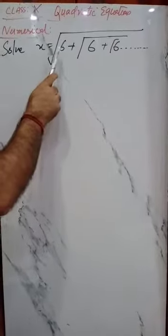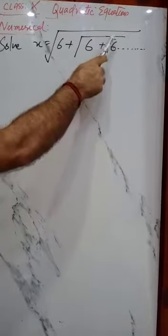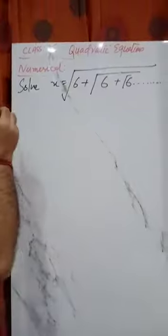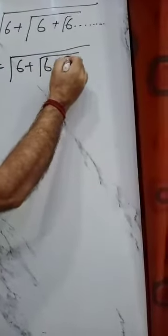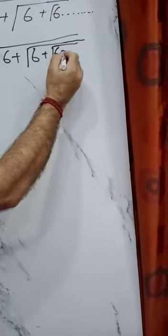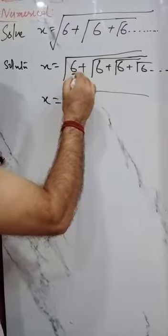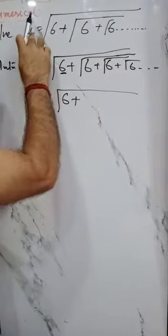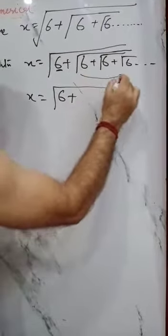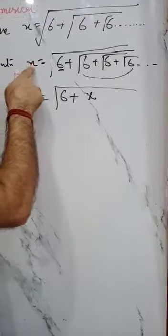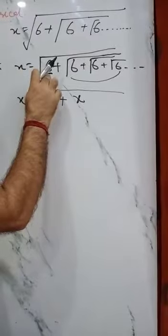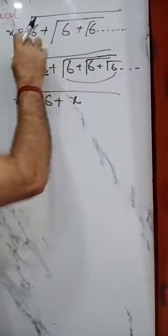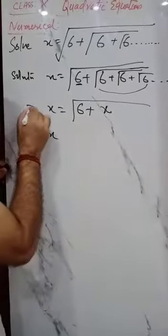We need to solve: x = √(6 + √(6 + √(6 + ...))) and so on. Since the expression under the root repeats infinitely, we recognize that the inner part is the same as x itself. So we can write x = √(6 + x).